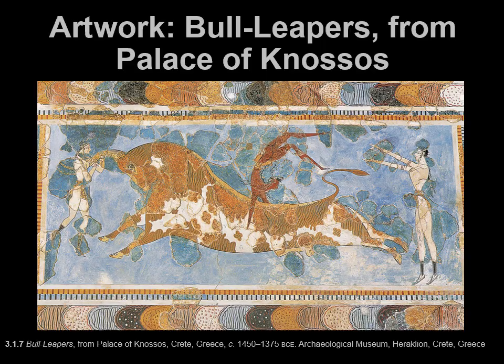Here is the fresco that we have been referencing. This was found in the palace, and it's a dynamic work of art — it's fun to look at. There's obviously a relationship between animal and human, and the animal here is a bull, which relates to the Minotaur since it's a half bull, half man.